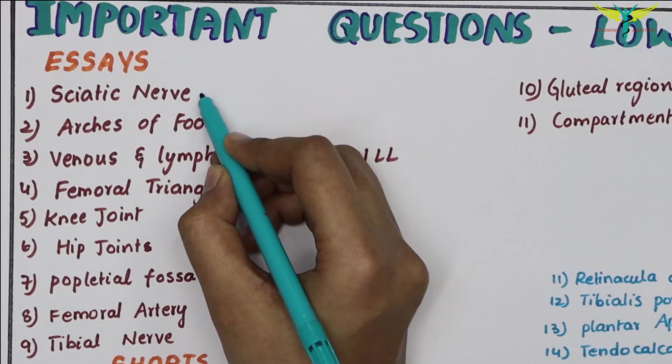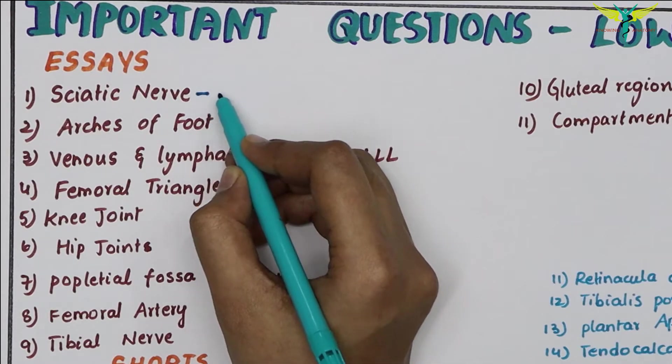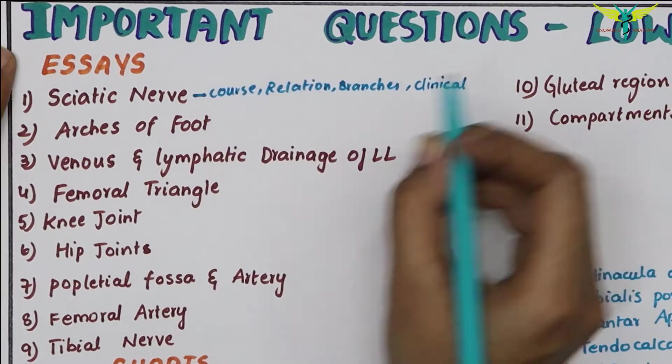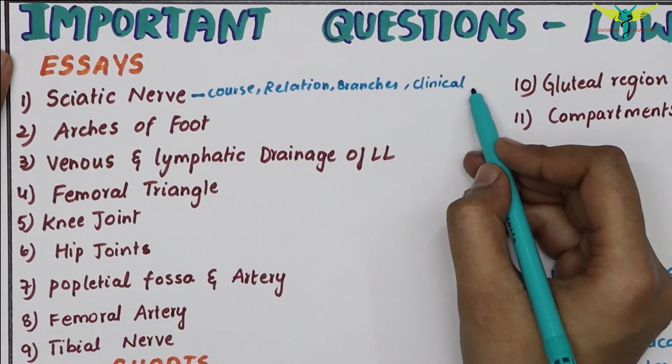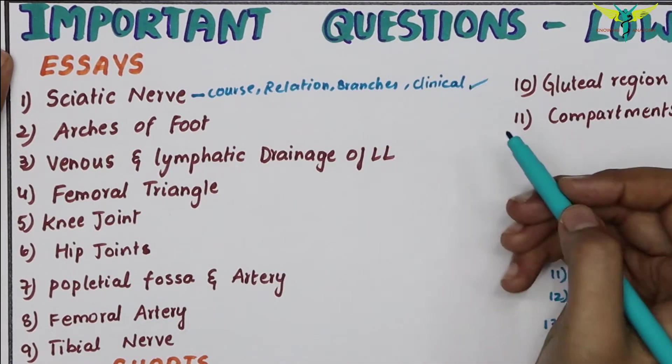The first essay question is the sciatic nerve. It is asked under the following headings: the course, relations, its branches, and the clinical aspect.